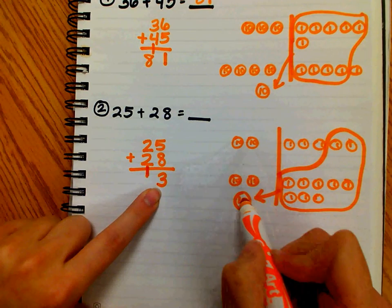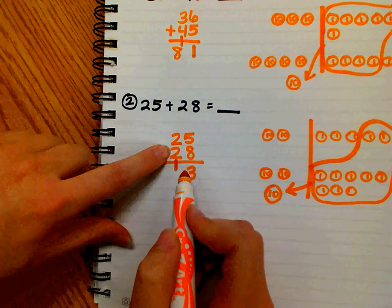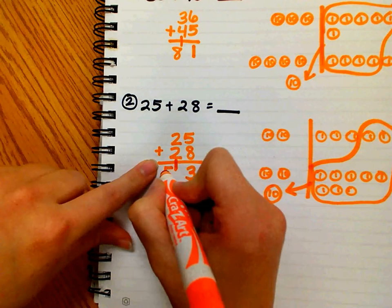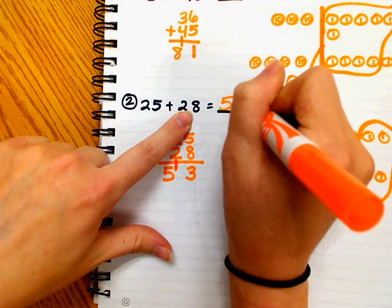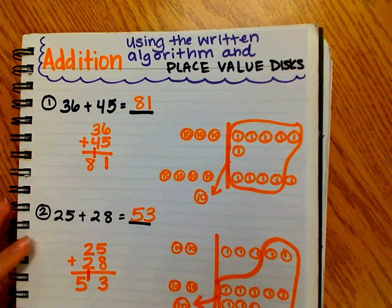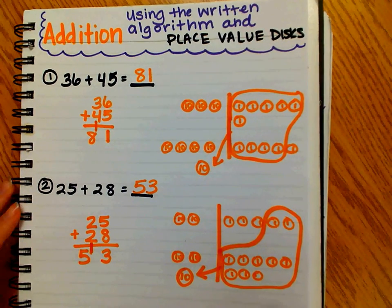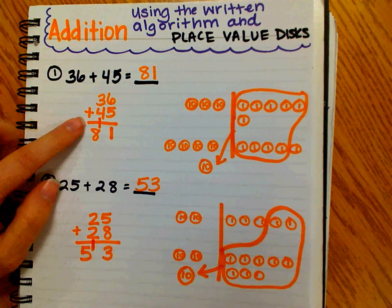I have one, two, three, four, five tens. Or using the written method, two plus two is four, four plus one is five. So 25 plus 28 equals 53. And that's how you can use addition by modeling using place value disks and the written algorithm.